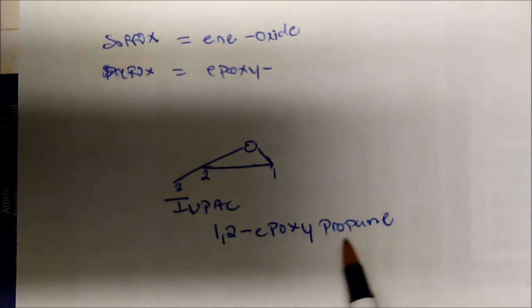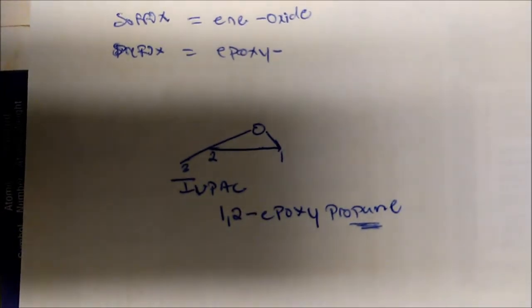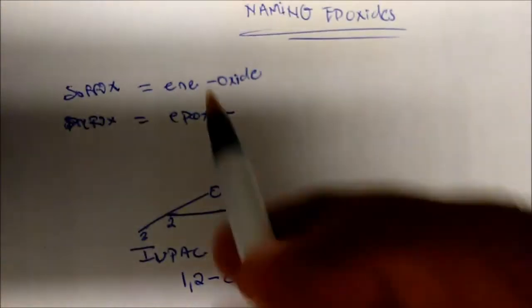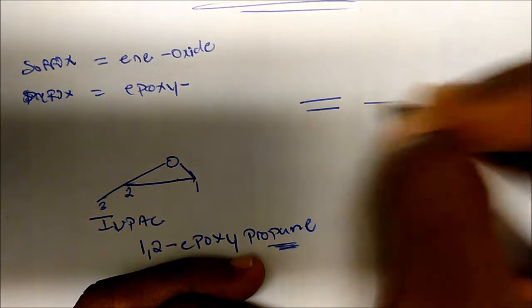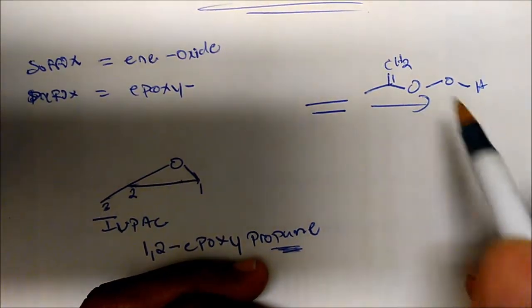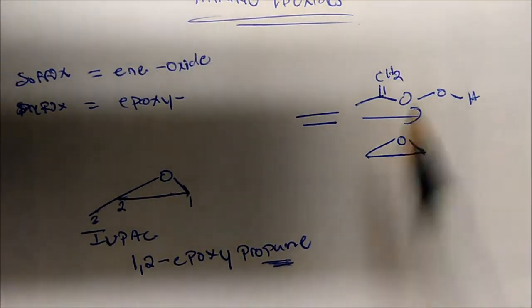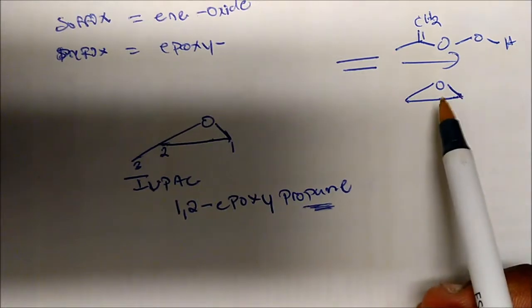So to summarize: list your longest continuous chain, then list the substituent — with 'epoxy' as the substituent prefix for recognizing the epoxide. Now what would be the common name, or the alkene oxide style name? If we take ethylene and react it with peracetic acid, we get an epoxide — that's where this naming style comes from. We can view this as an alkene that went to an epoxide.